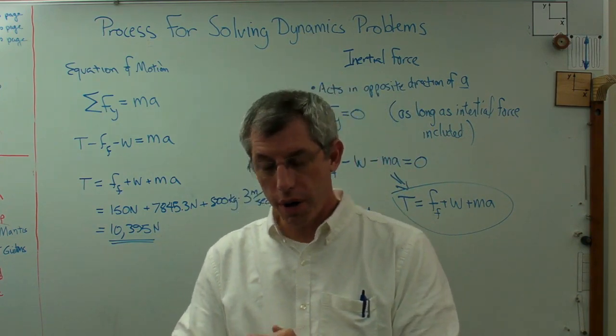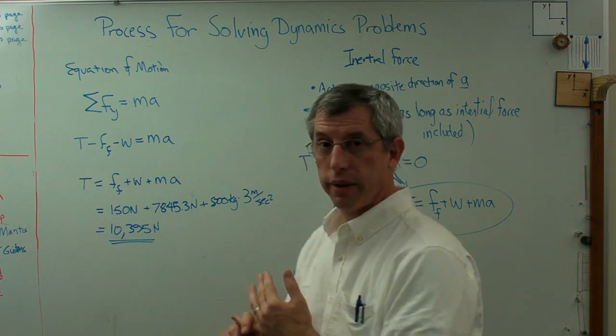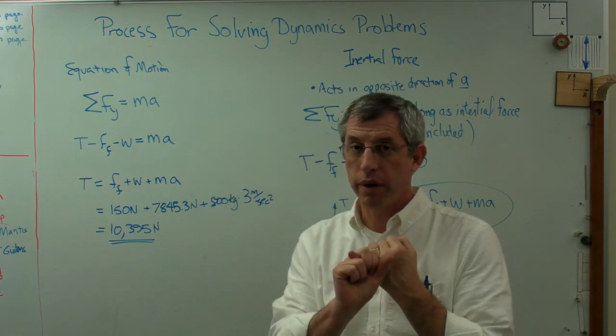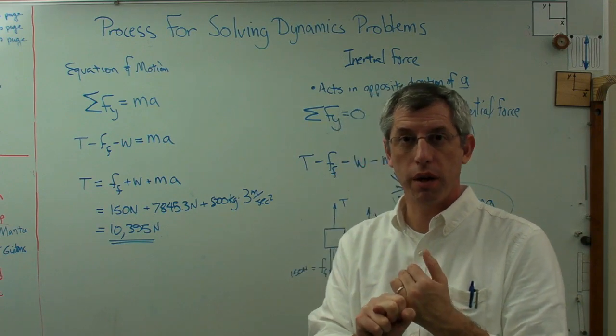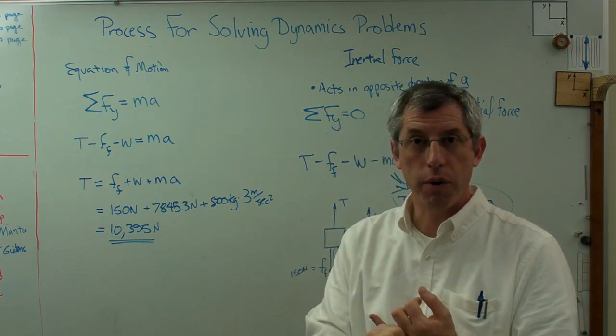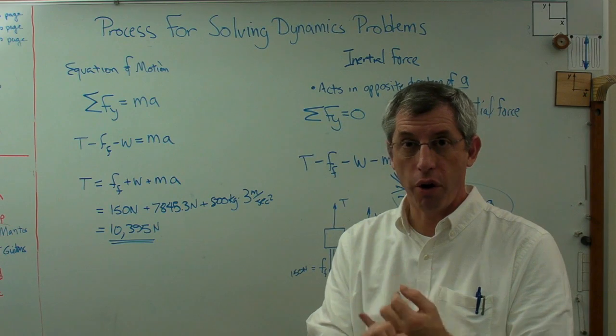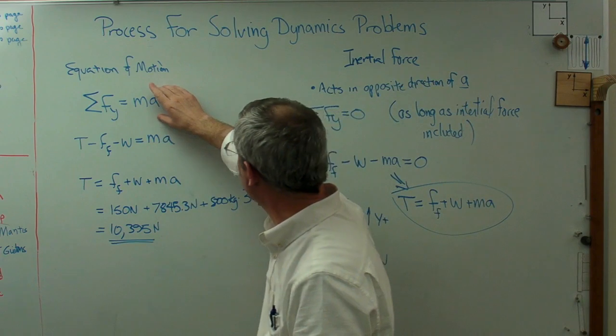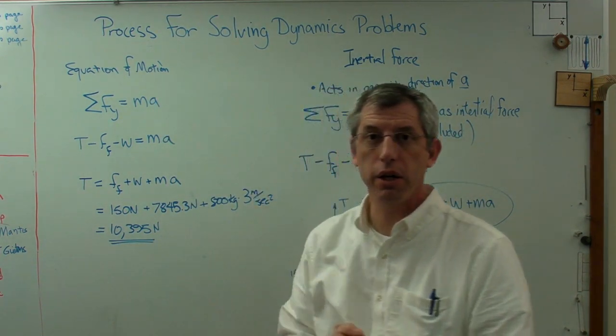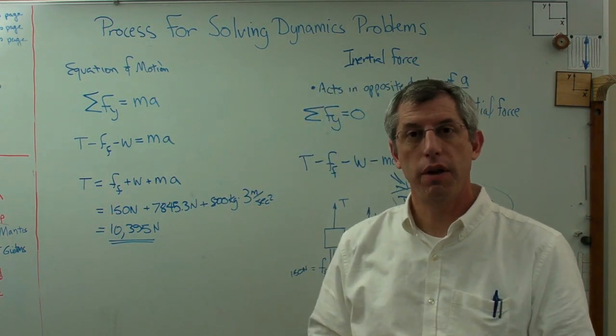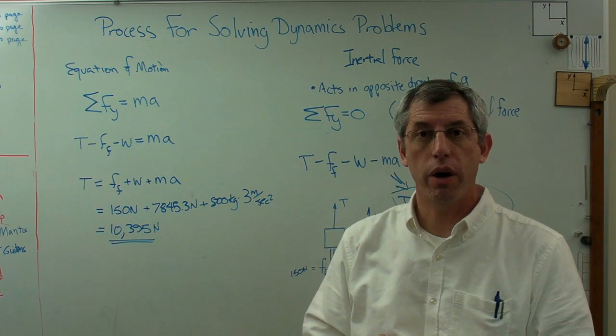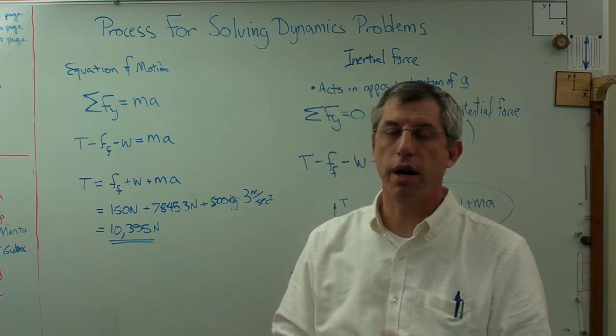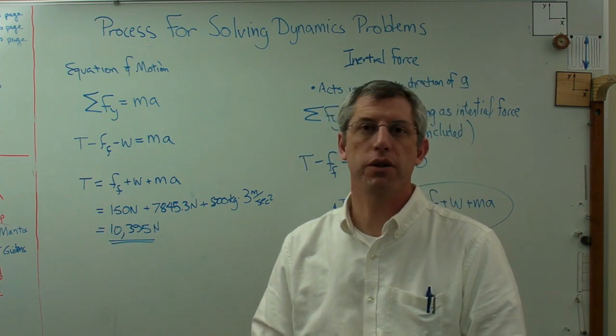But more important, let's review the process. Draw a picture. If you're not drawing a picture, you might have a much higher chance of making a mistake. Then draw your free body diagram to identify all your forces. Then, write out your equations of motion using either this process or this one. They're mathematically equivalent. Once you've done that, find the quantity you need to solve for. In our case, it was tension. Solve for that, and then you're done. I hope this helps, and I'll see you next time.